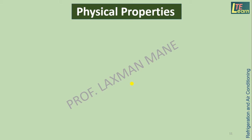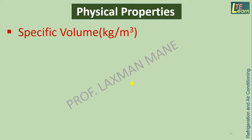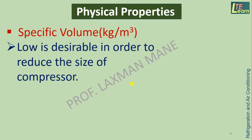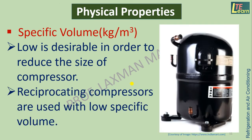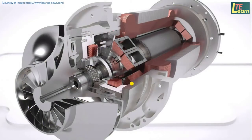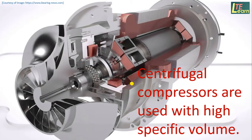Physical properties of refrigerants include Specific Volume — the volume in cubic meters of 1 kg of refrigerant — which should be low in order to reduce the size of the compressor. Hence, reciprocating compressors are used with low specific volume refrigerants. In the case of high specific volume, centrifugal compressors are used.